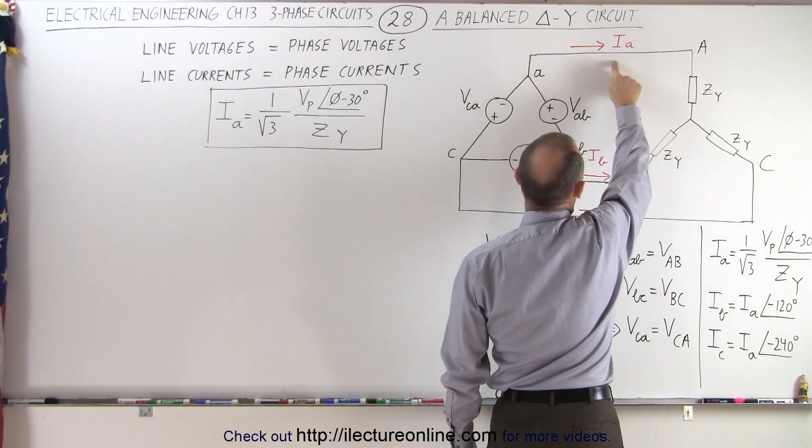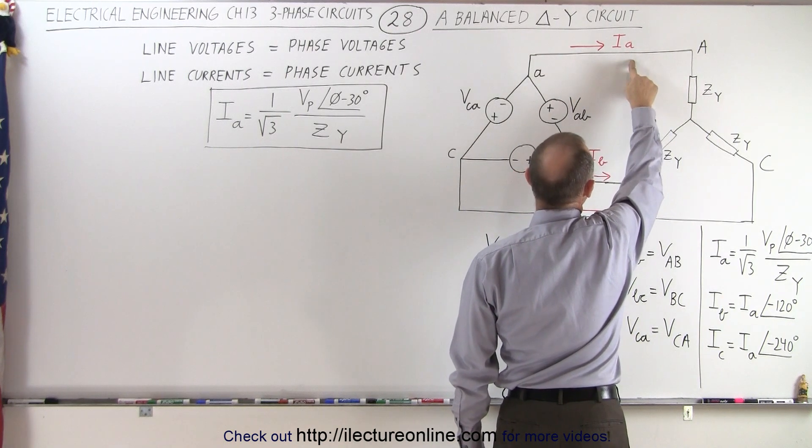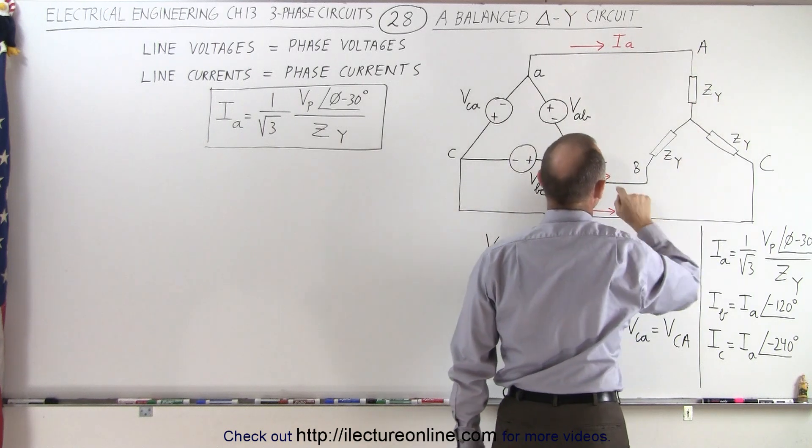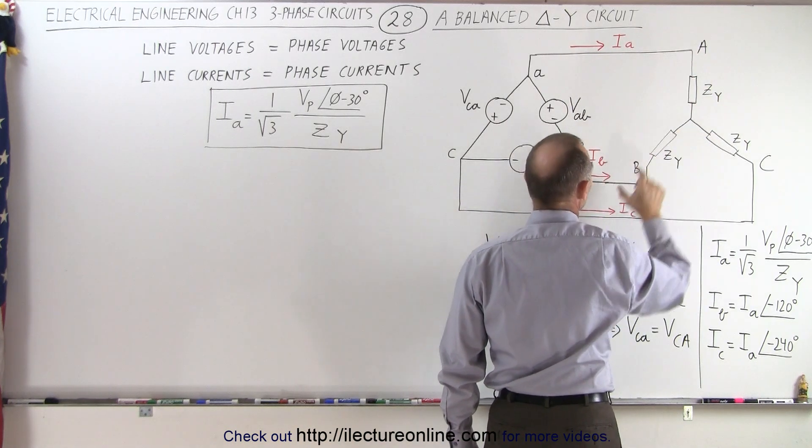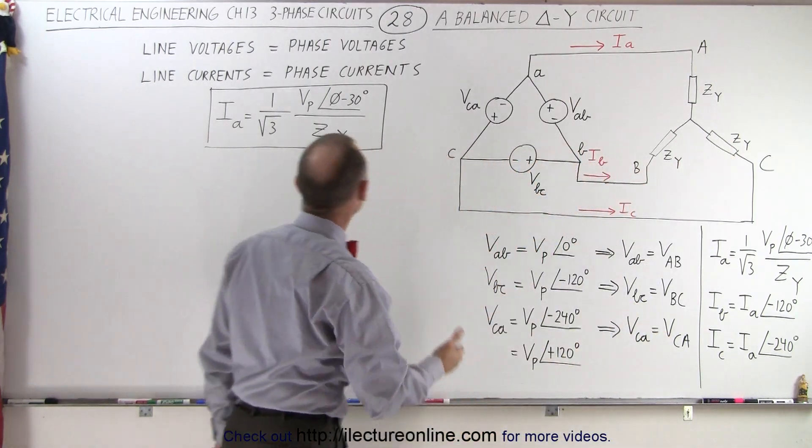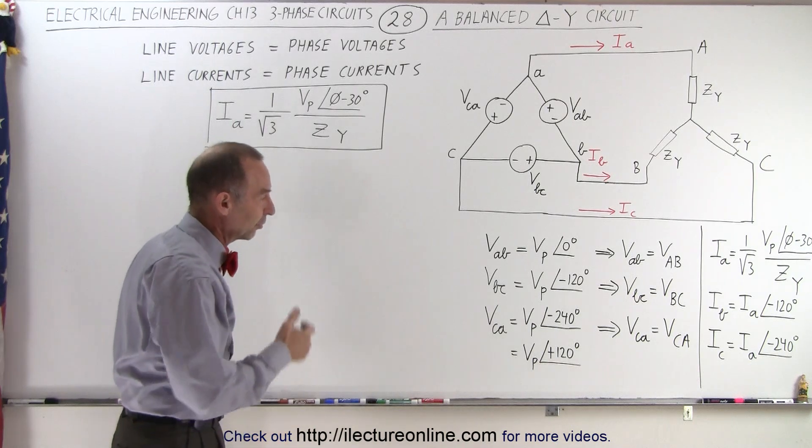We can see that the current IA here, the line current, must equal the current entering the load right here to the load resistor. IB must equal the current going through here, and IC must equal the current going through there. So we can see that the line currents must equal the phase currents.